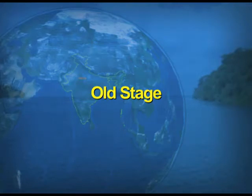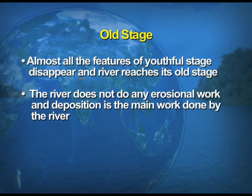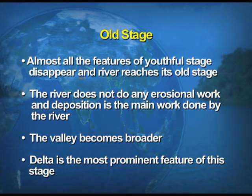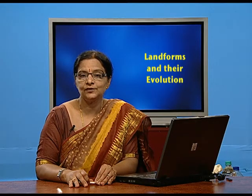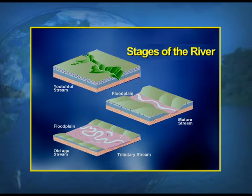In the old stage of the river, almost all the features of the youthful stage disappear. The effectiveness of the river is very less; it does not do much erosional work, and deposition is the main work done. The valleys formed become broader and delta is the important feature formed in the old stage. You can view all three stages — youthful, maturity, and old — on the screen.